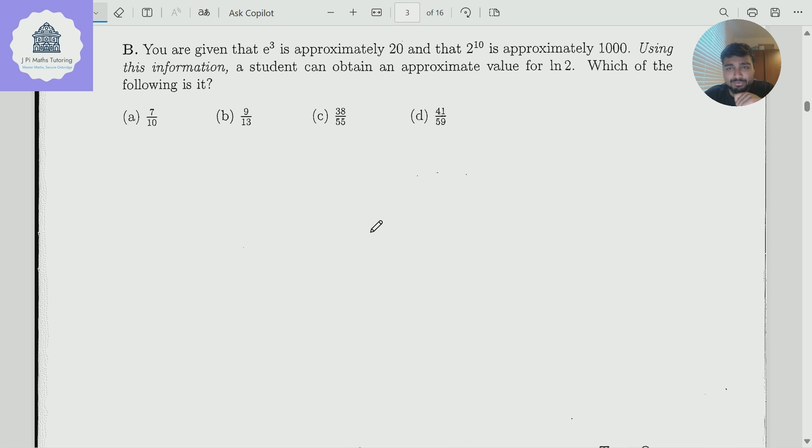You're given that e to the power of 3 is approximately 20 and that 2 to the 10 is approximately 1,000. Using this information, a student can approximate the value for ln2. Which of the following is it? 7 tenths, 9 over 13, 38 over 55, or 41 over 59.